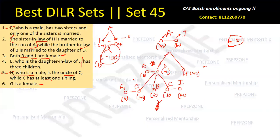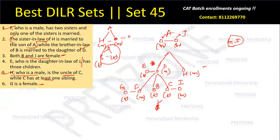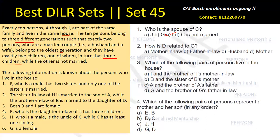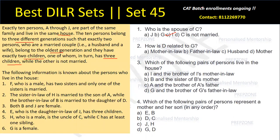First question: who is the spouse of C? C's spouse is I, so the answer is option C. Next question: how is D related to G? D and G — D is the father-in-law of G.